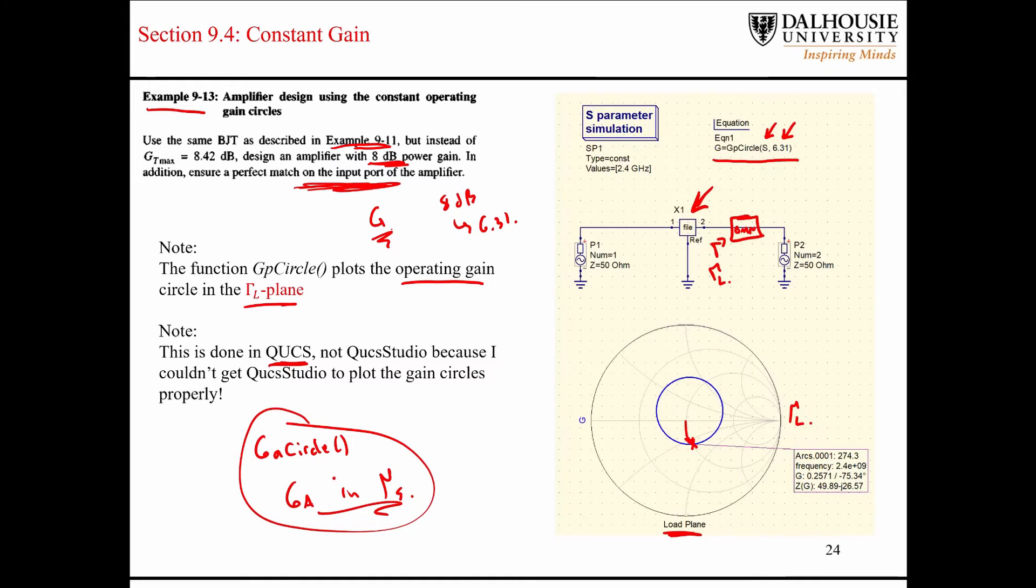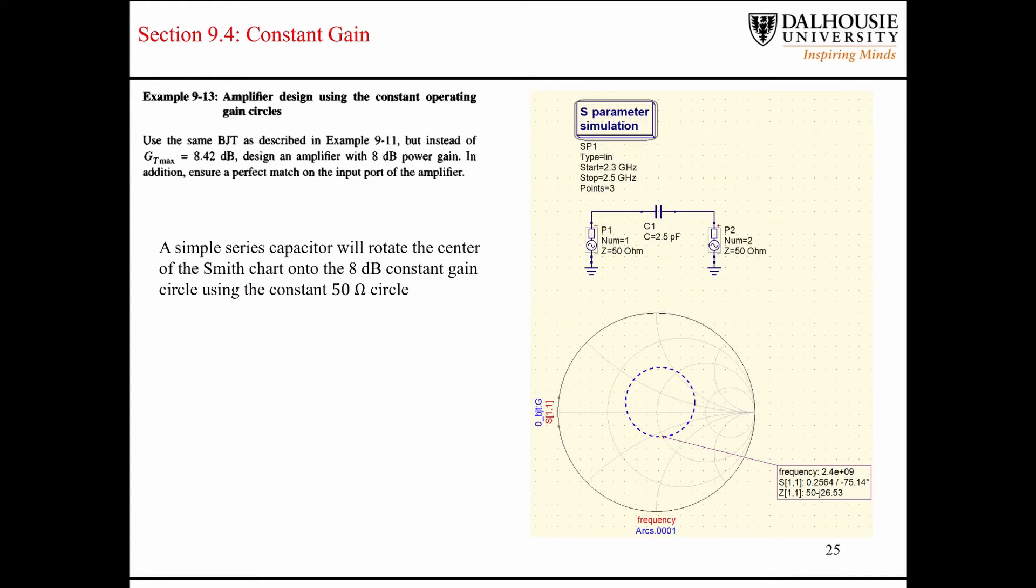So, we need to find the value of that capacitor. So, I set up another S-parameter simulation with a capacitor. I increase the value of the capacitor manually, bit by bit. You can also do this using SimSmith, where you use the technique where you right-click and drag, and it will automatically figure out that value for you. But I just play it around with different values, and you can see here that my S-parameter simulation of this capacitor ended up on the 8 dB gain circle.